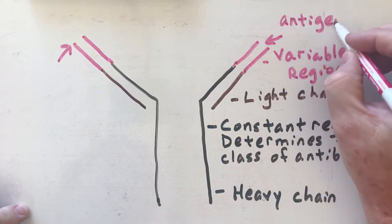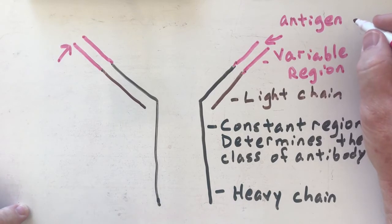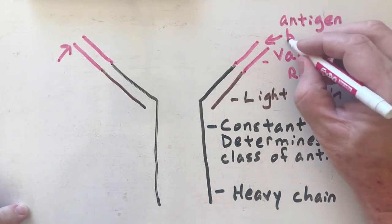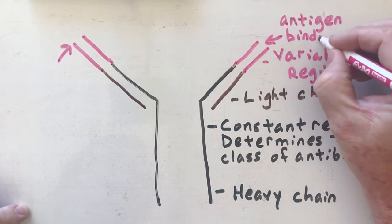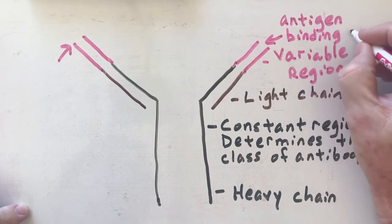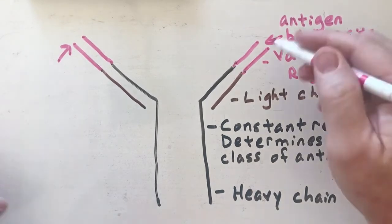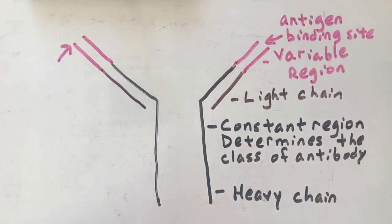An antigen is basically anything that causes an immune response. This is my antigen binding site. Let's take a look at how these work.